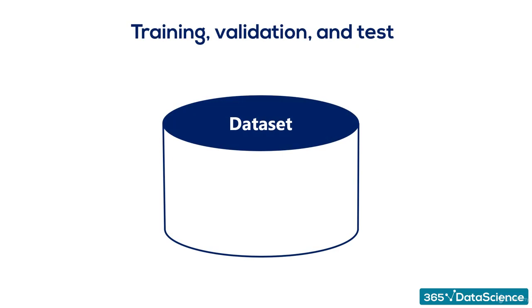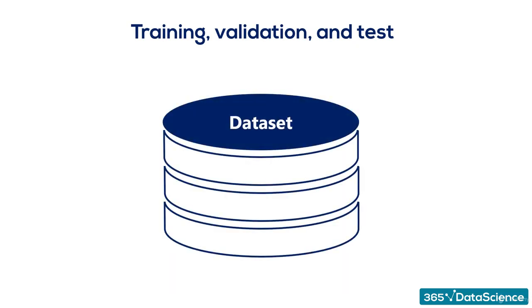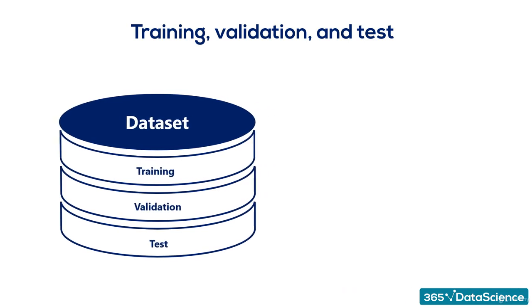Usually, we'll be able to spot overfitting by dividing our available dataset into three subsets – training, validation, and test. The first one is the training dataset.